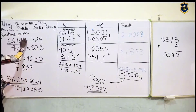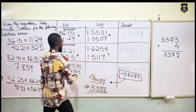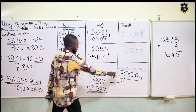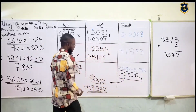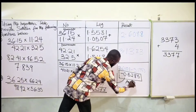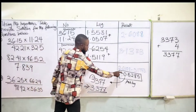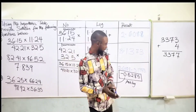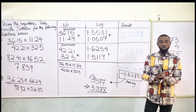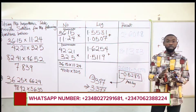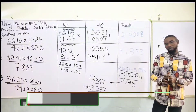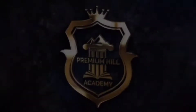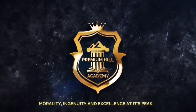In summary: first we took the log of the numerator values and added them. Then we took the log of the denominator values and added them. We subtracted the denominator result from the numerator result, and then looked for the antilog. The antilog of point 52 under 8, difference 5, gave 3377. Adding 1 to minus 0, we move one place — giving us 3.377. Thank you very much guys, Premium Hill Academy — morality, ingenuity, and excellence at its peak.